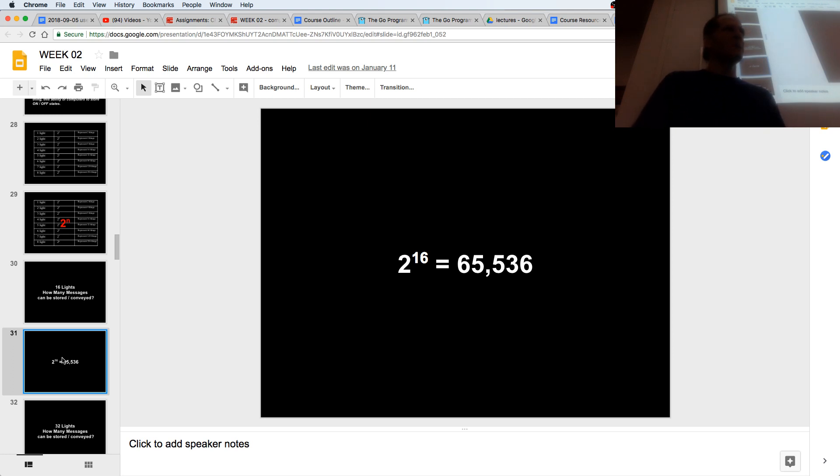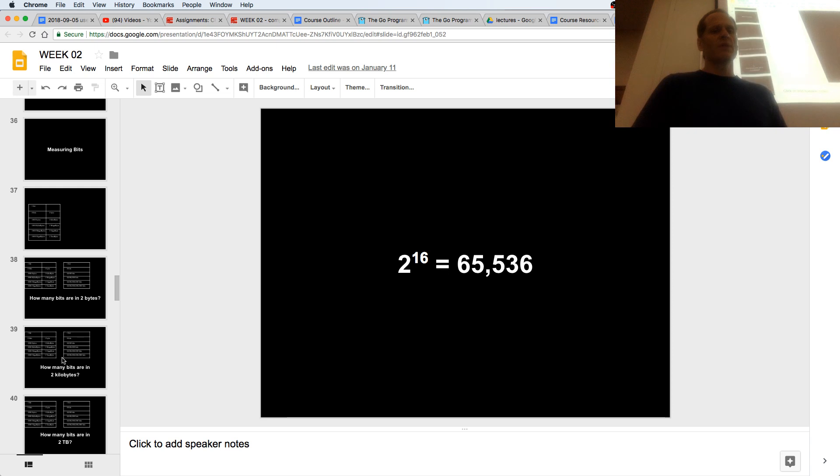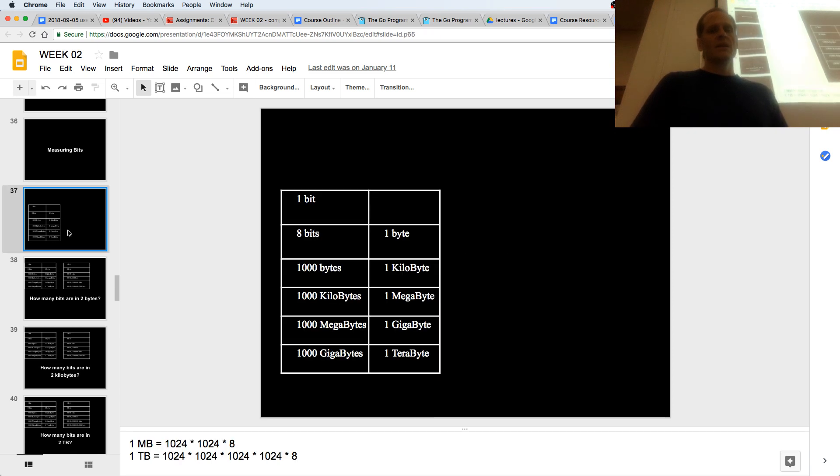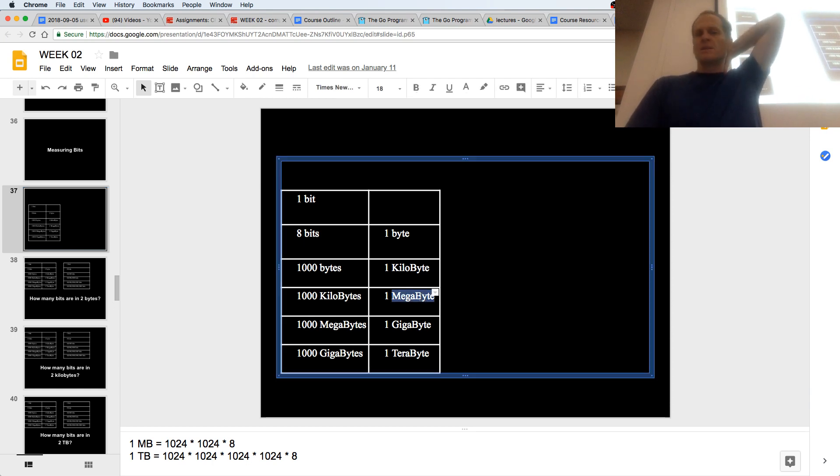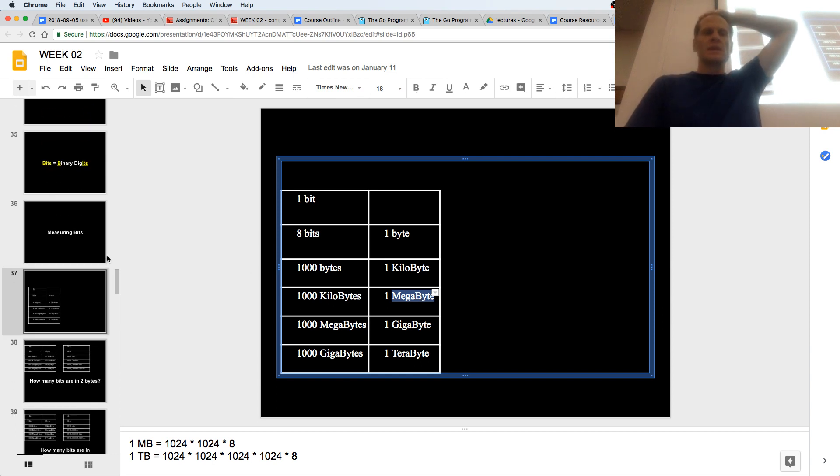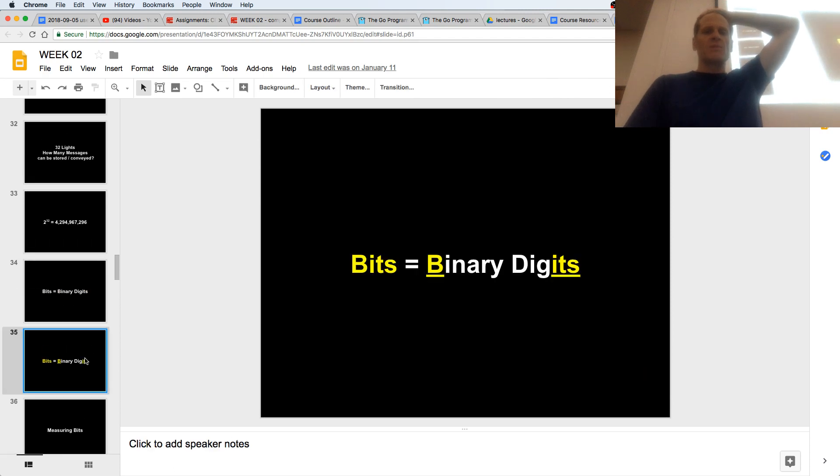So we have bits, and then 8 bits is a byte. And then 1,024 bytes is a kilobyte, and 1,024 kilobytes is a megabyte. And 1,024, round it to 1,000 if you want, megabytes is a gigabyte. And 1,024 gigabytes is a terabyte. So this is, if you have 1 megabyte, you have a million bytes or 8 million bits, rounding it, rounding off that 24. So that's measuring your binary digits, and we get bits from binary digits.